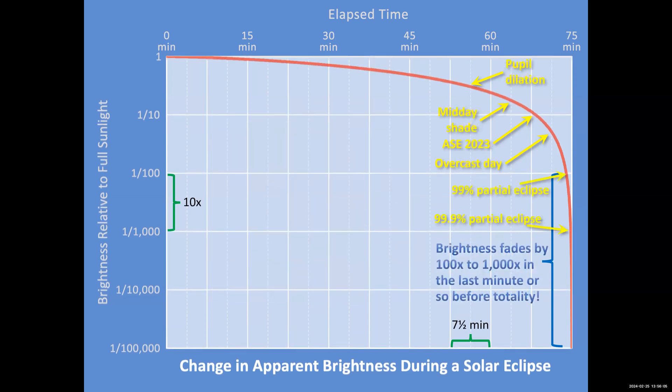I want to point out where a 99% partial eclipse falls. You've got 1% of the sun showing. It's one one hundredth of the brightness of full day sun, but it's still a thousand times brighter than totality. Likewise, if you're at 99.9% partial eclipse, sounds great, right? But one thousandth of the sun is still showing. That means you still have at least a hundred times more light coming from the sun than you have during totality. So you cannot see the same things that you see during a total eclipse.